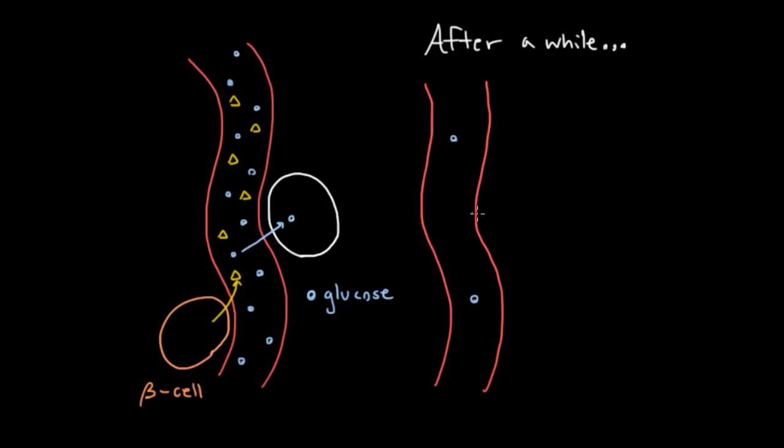Partly because you've used it up. Other cells in your body, like your brain cells have used it up, but partly also because insulin has pushed a lot of the glucose into these storage cells here. Now it's not actually stored there as glucose, it's converted to something else, which we'll talk about in the next video.